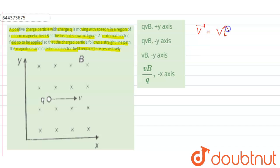So here the velocity will be equal to v î and the magnetic field, that is B vector, will be equal to minus B k̂. So the magnetic force experienced will be qvB and its direction will be equal to q v⃗ × B⃗.